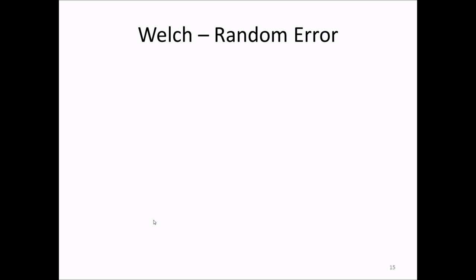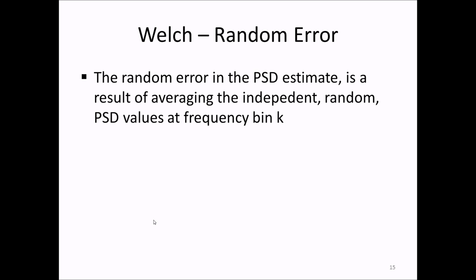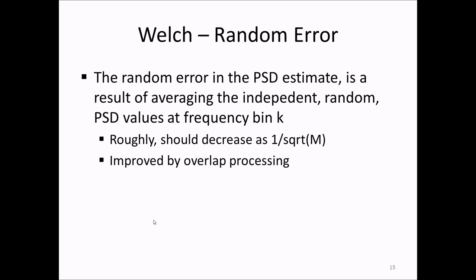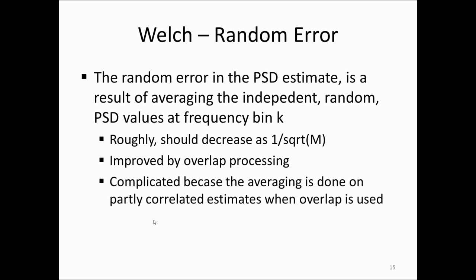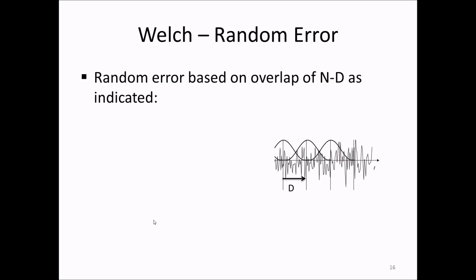Next, we will talk about the random error in Welch PSD estimates. This is a commonly misunderstood subject, so we will treat it in some detail. It's erroneously explained in many textbooks on random data analysis. The random error in a PSD estimate is a result of averaging the independent random PSD values at frequency bin k. Roughly speaking, we know that the normalized random error, or standard deviation, based on m averages, should be 1 over square root of m, the number of averages. This is exactly true as long as we do not use overlapping segments. For PSD estimates, we can improve the error by using overlap processing. The error, then, is complicated to calculate as there is correlation between the averages. This effect is further influenced by the time window that we use.